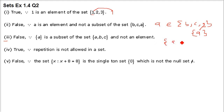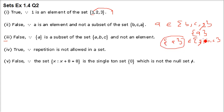Third: {a} ∈ {a, b, c}. This is also false. Because {a} is a set, and we have element a here — we don't have the set {a} as an element inside. If it has to belong to this set, it has to be listed there as a set element, but it is not.